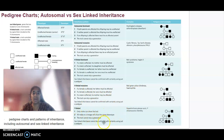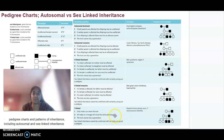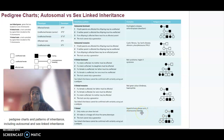Y-linked inheritance is very easy to identify in a pedigree because only males can show the trait. All males in a lineage will show that same phenotype, and it cannot skip a generation. An example is Y-chromosome infertility.